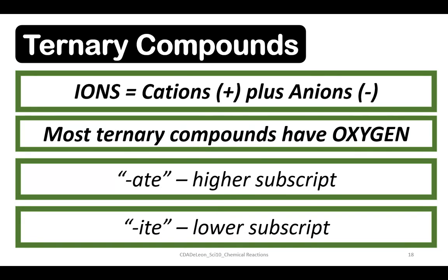Ions can be cations with a positive charge and anions with a negative charge. Most ternary compounds contain oxygen. The suffix 'ate' corresponds to the higher subscript while 'ite' corresponds to the lower subscript.